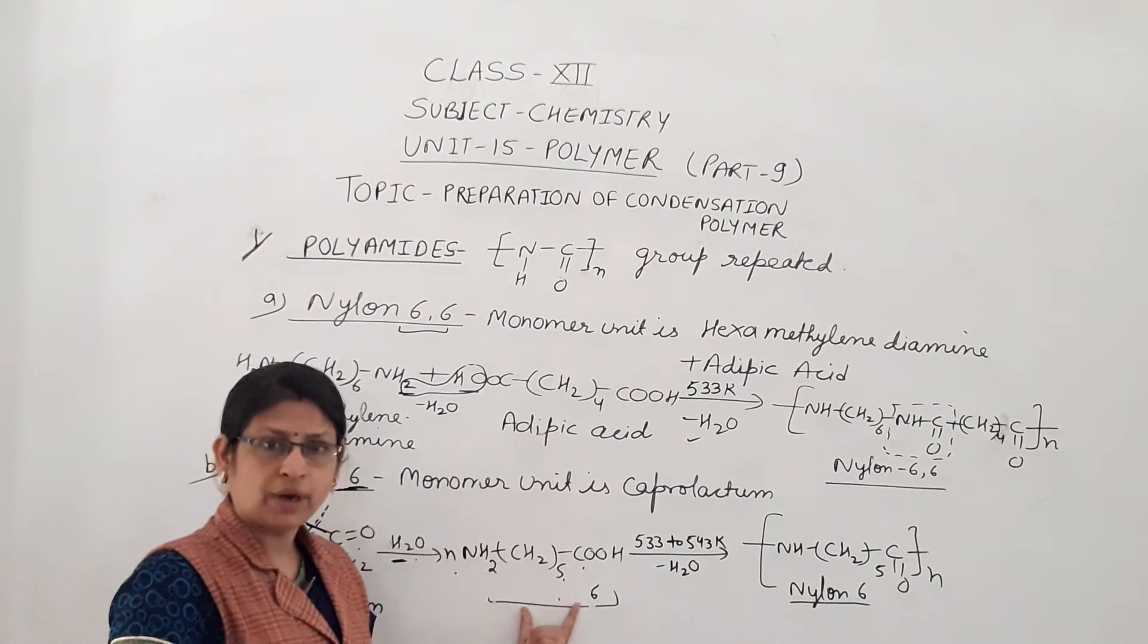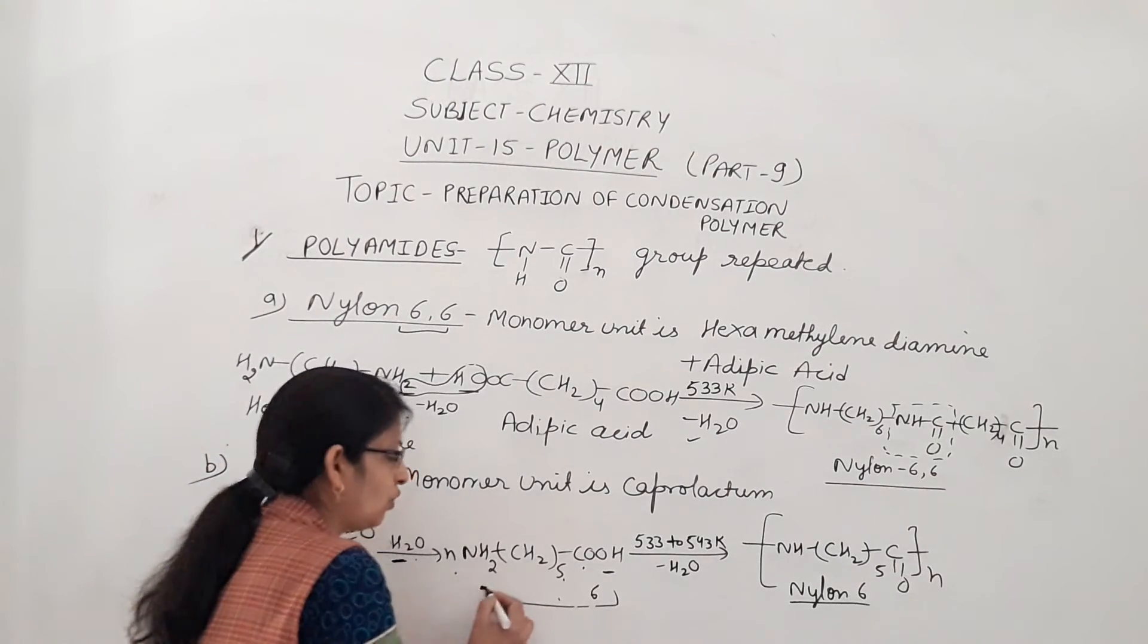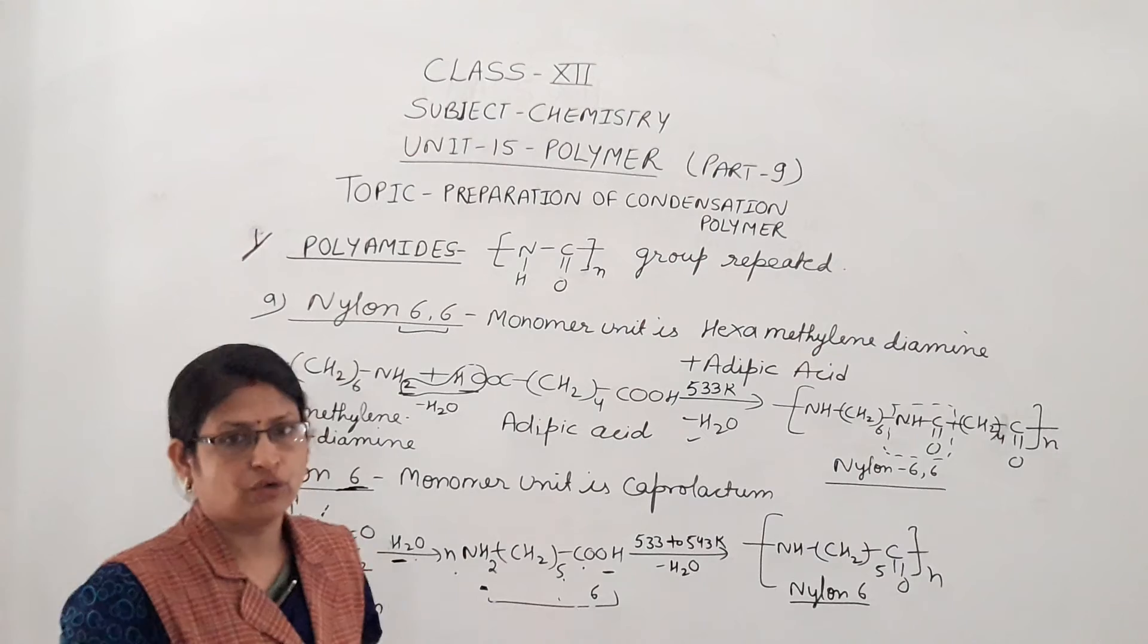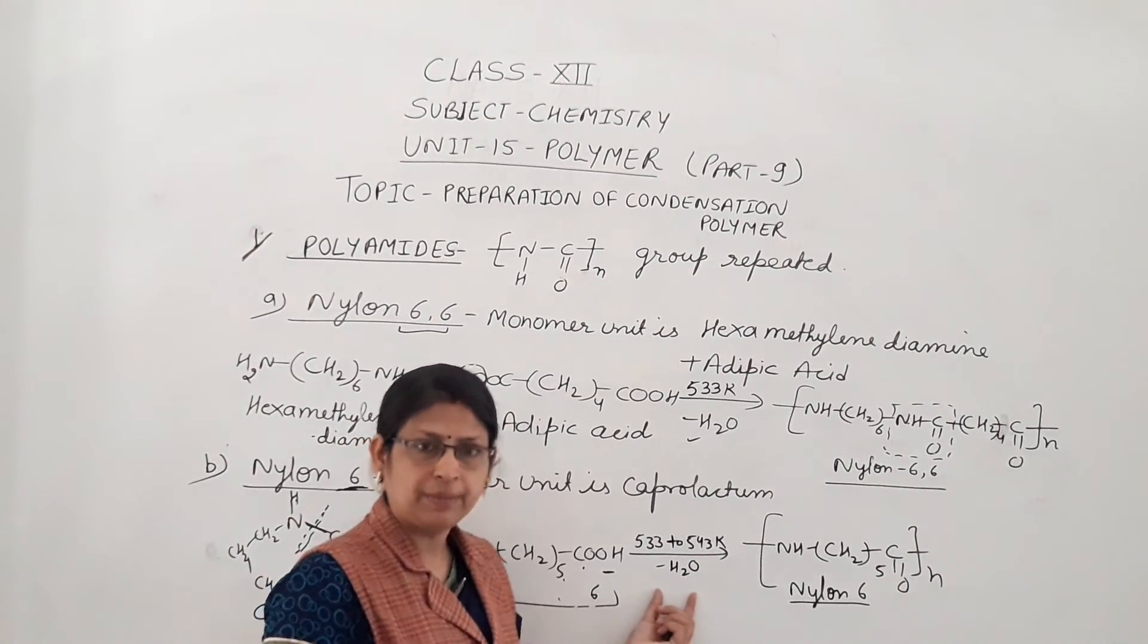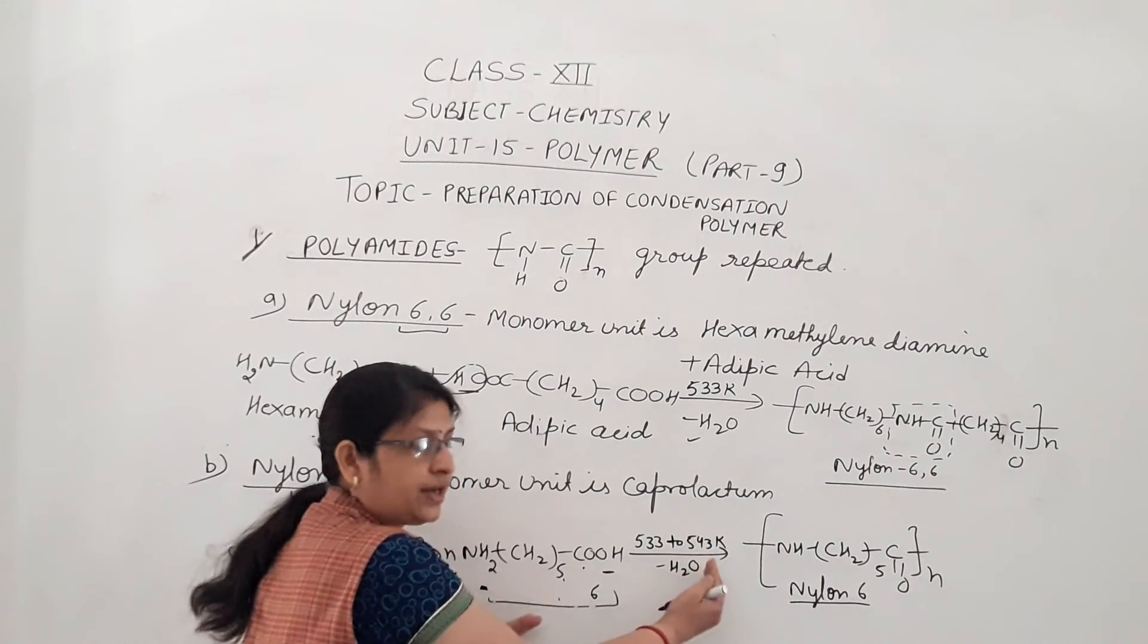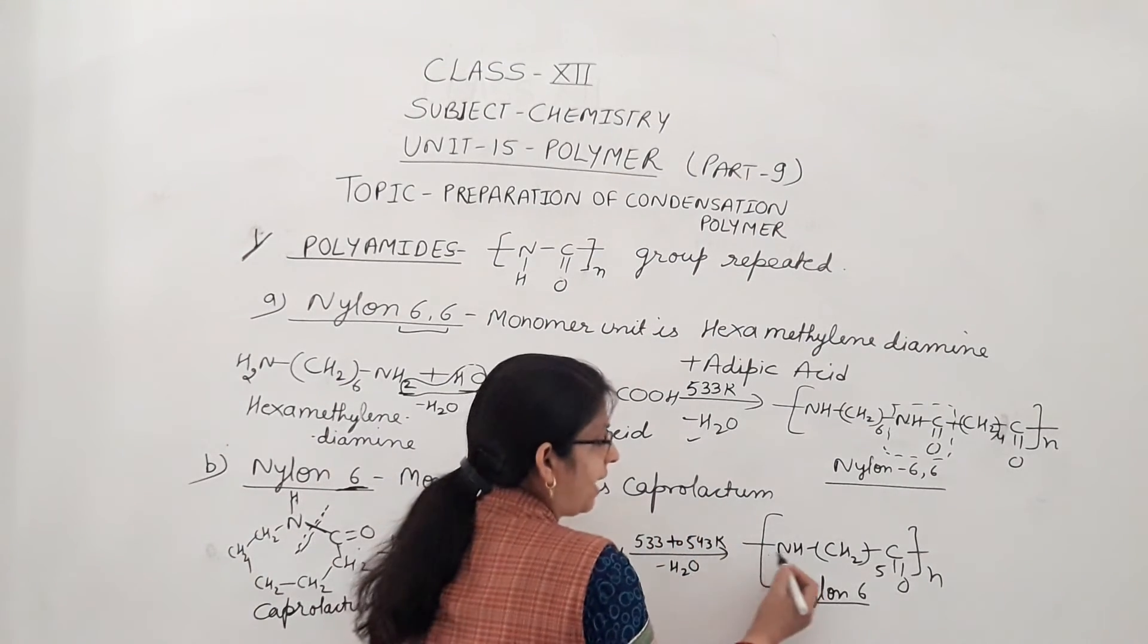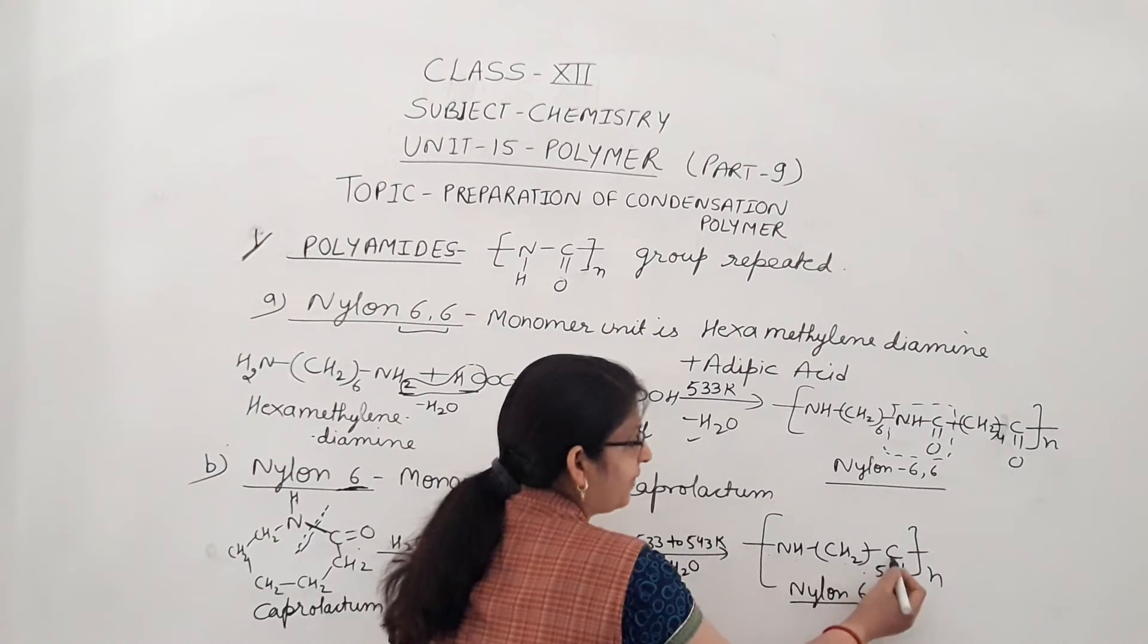So when we heat it, water molecule is eliminated when two monomer units are joined. We write it: NH-(CH2)5-CO.